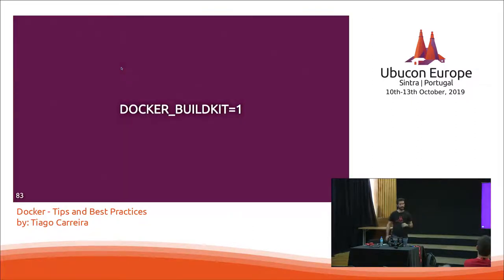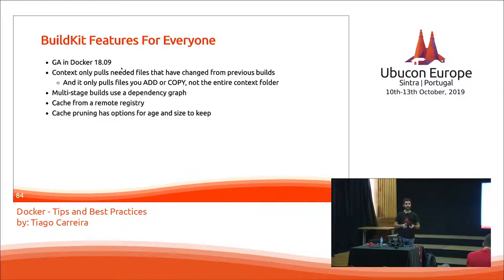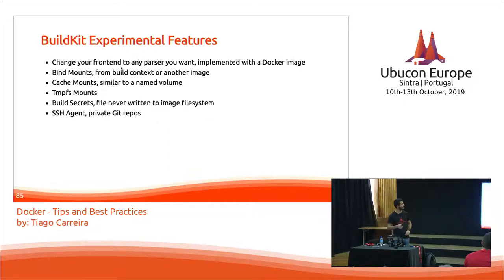Another feature worth knowing: Docker BuildKit. It's a new, improved build engine, previously in the Enterprise Edition, released in Docker 18.09. It's somewhat faster, but the most important thing is the extra features it enables, which I'll show next. To use BuildKit you need to change the parser directive at the top of your Dockerfile.